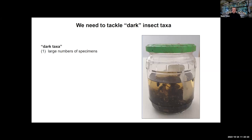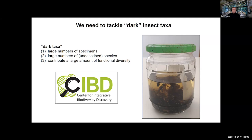These samples consist of large numbers of specimens and large numbers of undescribed species. The species in those samples contribute a large amount of functional diversity. They may not contribute all that much biomass since many of these taxa are really small. At the Center for Integrative Biodiversity Discovery at the Natural History Museum in Berlin, we try to deal exactly with these groups that are so plentiful they are hard to work with using traditional techniques.